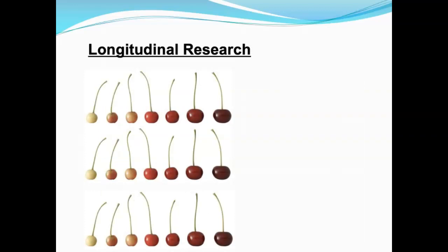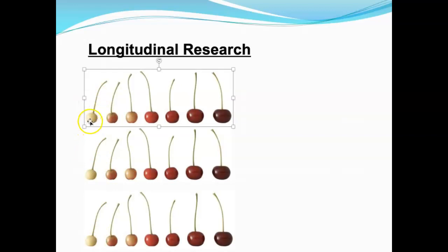One way to account for cross-sectional drawbacks is longitudinal research, where you take one group and follow it over time. The benefit is that any environmental effects happen to all subjects equally because they're all alive at the same time, eliminating inconsistent environmental effects between groups. The data from longitudinal research tends to be good and accurately represents the group being studied.